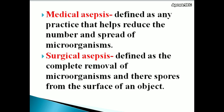There are two types: medical asepsis and surgical asepsis. Medical asepsis is defined as any practice that helps to reduce the number and spread of microorganisms. Surgical asepsis is defined as the complete removal of microorganisms and their spores from the surface of an object.